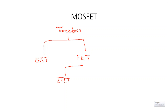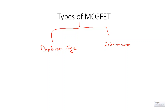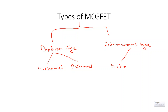The second is the MOSFET, and finally we have the MOSFET. Now MOSFET has two types: one is the depletion type MOSFET, and the other is the enhancement type MOSFET. Again, we have the n-channel depletion type MOSFET and the p-channel depletion type MOSFET. Similarly for enhancement type, we have the n-channel enhancement type MOSFET and the p-channel enhancement type MOSFET.